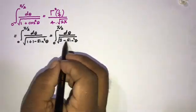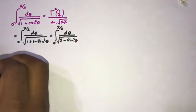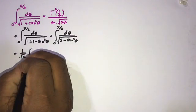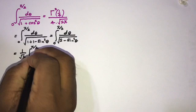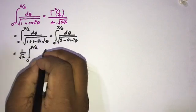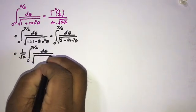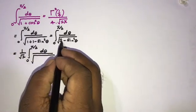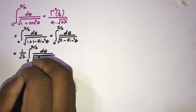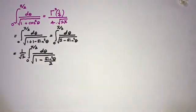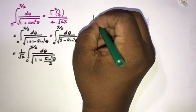We can take the square root of 2 as a factor out of the denominator, giving us 1 over √2 times the integral from 0 to π/2 of dθ over √(1 minus (sin²θ)/2).